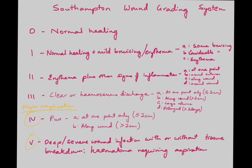Let's revise the Southampton Wound Grading System. 0 is normal healing. 1 is normal healing with mild bruising or Erythema. 2 is Erythema plus other signs of infection. 3 is clear or hemocerous discharge. 4 is pus. And 5 means deep, severe wound infection with or without tissue breakdown, or a hematoma which requires aspiration. Grades 1, 2, 3, and 4 are divided into subtypes.